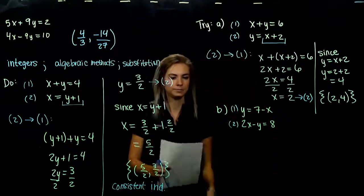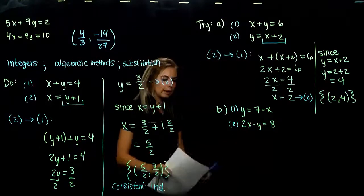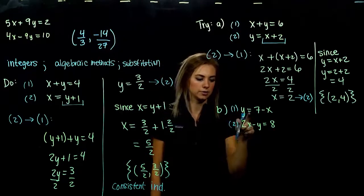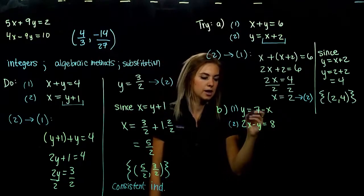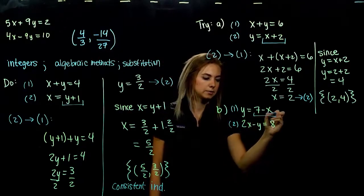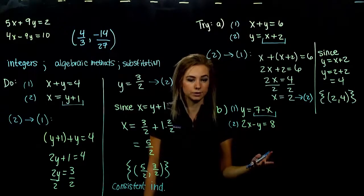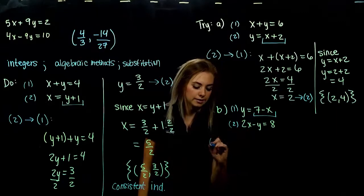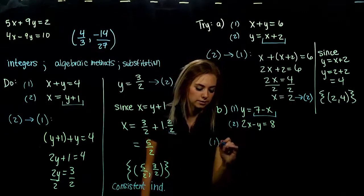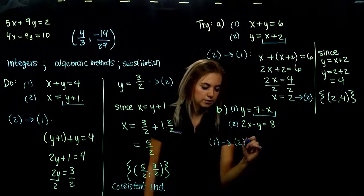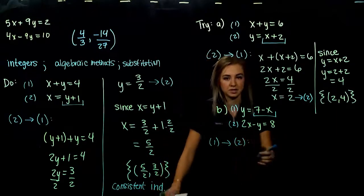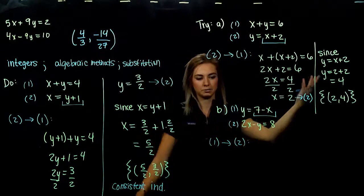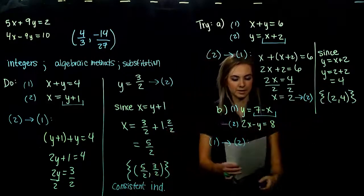For the second problem, y is already isolated in the first equation, so wherever I see a y in equation 2, I substitute in 7 minus x. We take equation 1 and substitute it into equation 2 — it really doesn't matter which order; we'll get the same answers. So wherever I see a y in my second equation, I'm plugging in that piece.